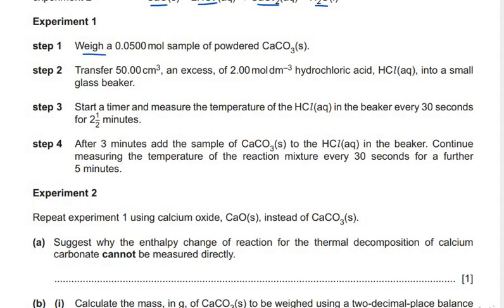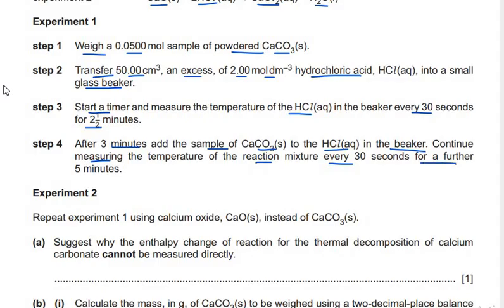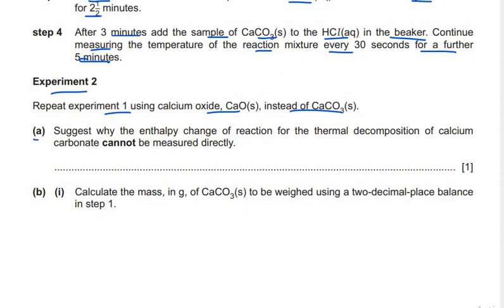The detail of experiment 1: weigh a 0.050 mole sample of powdered calcium carbonate and transfer 50 cm³ of excess 2 mol/dm³ hydrochloric acid into a small glass beaker. Start a timer and measure the temperature of the hydrochloric acid every 30 seconds for two and a half minutes. After the third minute, add the calcium carbonate to the HCl and continue measuring temperature every 30 seconds for a further five minutes. In experiment 2, repeat using calcium oxide instead of calcium carbonate.